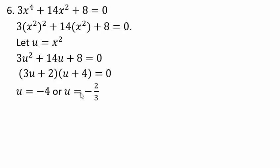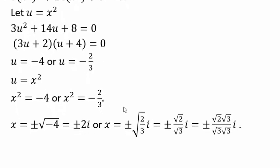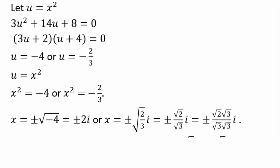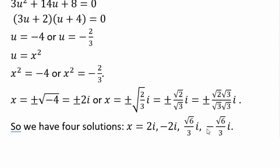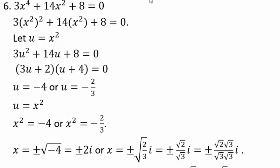So you have u equals negative 4 or u equals negative 2 thirds. Don't forget our u is x squared, so x squared equals negative 4 or negative 2 thirds. When you undo the squares, you use plus or minus square root because you're undoing an even power. You will have four solutions: 2i, negative 2i, and square root 6 over 3 times i. You can also write that as square root 2 over square root 3 times i; rationalizing the denominator by multiplying by square root 3 gives that form. Don't forget to go back and check your answers in the original equation — you should never get an equation wrong because you can always plug back in to verify.